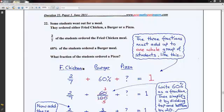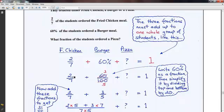And what I've done here is I've written down the meals: fried chicken, burger, and pizza. And I've put underneath each the fraction that each of the students chose. So, two-sevenths of the students, of the group of students chose fried chicken.